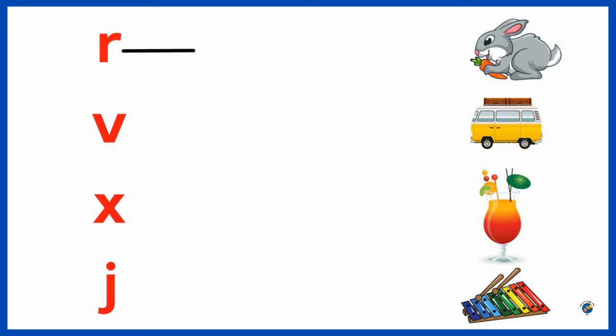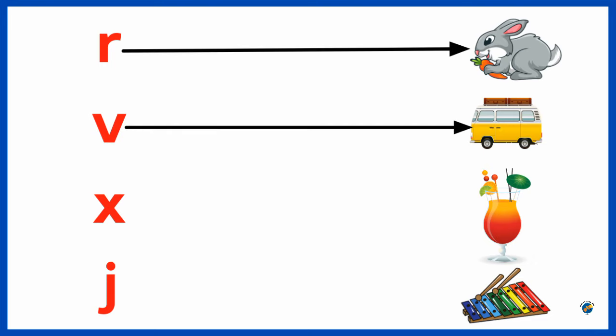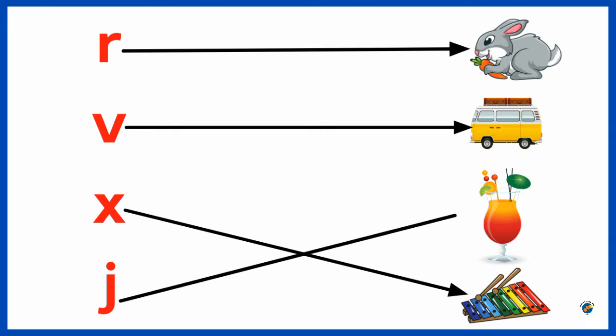R for Rabbit. V for Van. X for Xylophone. J for Juice.